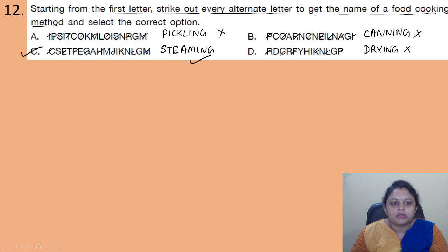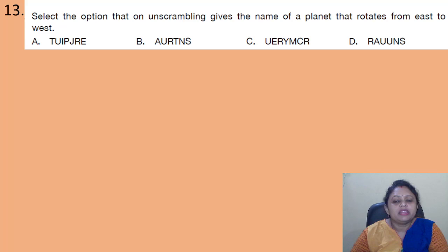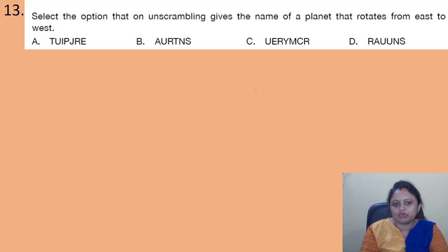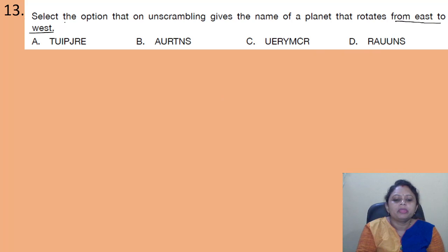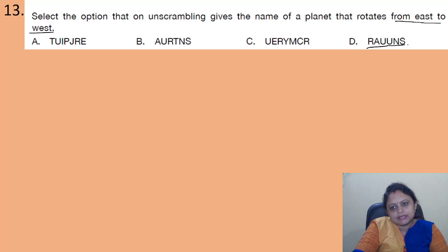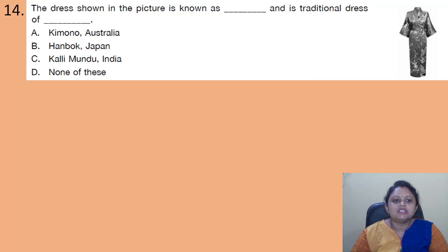Coming to the next question: select the option that on unscrambling gives the name of a planet that rotates from east to west. We need to unscramble the letters in each option to find a planet name. The planet that rotates from east to west is Uranus. Unscrambling the letters in option D gives 'Uranus'. The correct answer is option D.